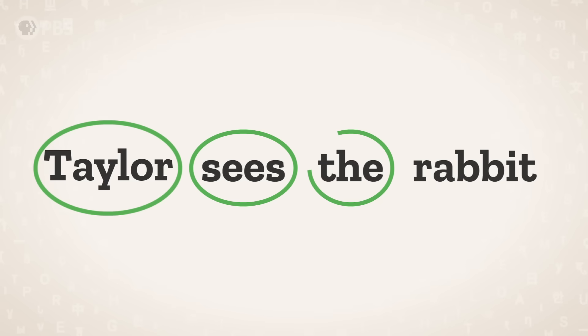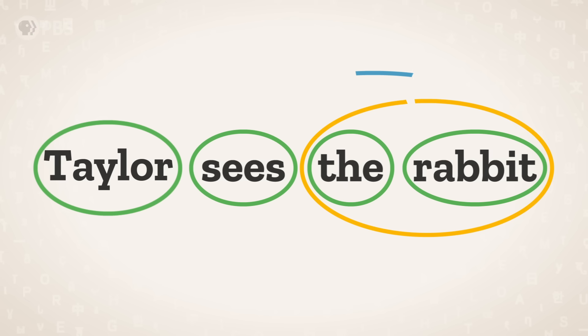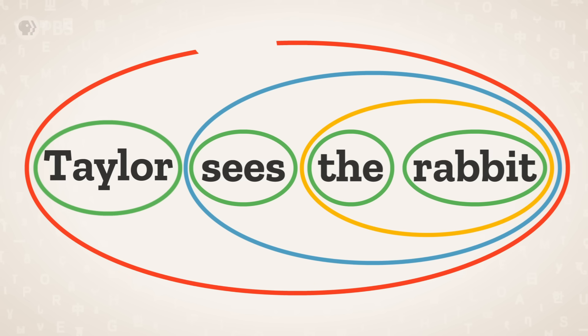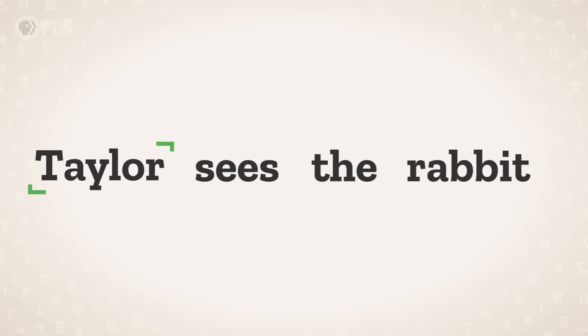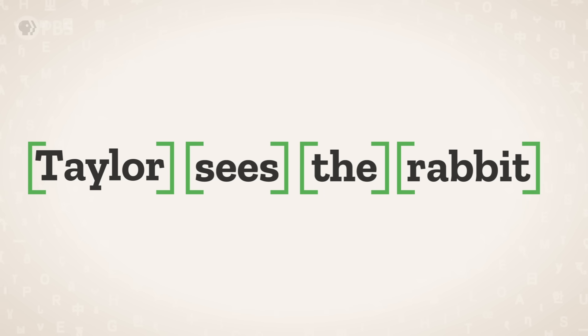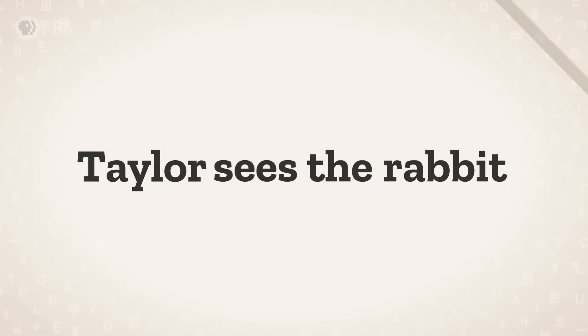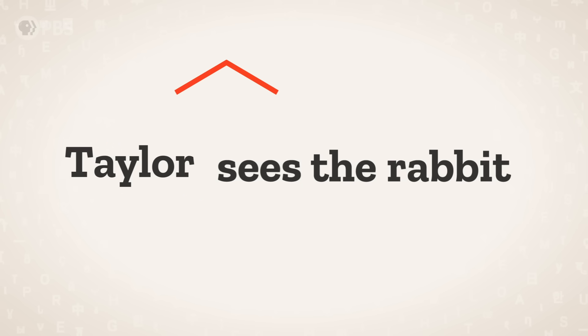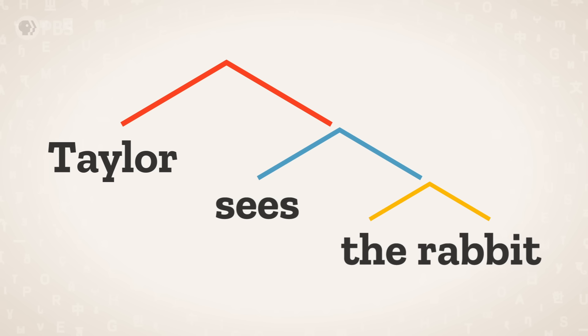A simple way to keep track of different parts of sentences is by drawing connections between the words. We could draw circles around each constituent, but circles get really big really quickly as our sentences get longer. Or we could draw brackets around each of the constituents — brackets are nice and compact, but they can be hard to easily scan and understand at a glance. So instead, linguists often represent the structural relationships between words using a tree structure diagram, sort of like a family tree, with nodes and branches.